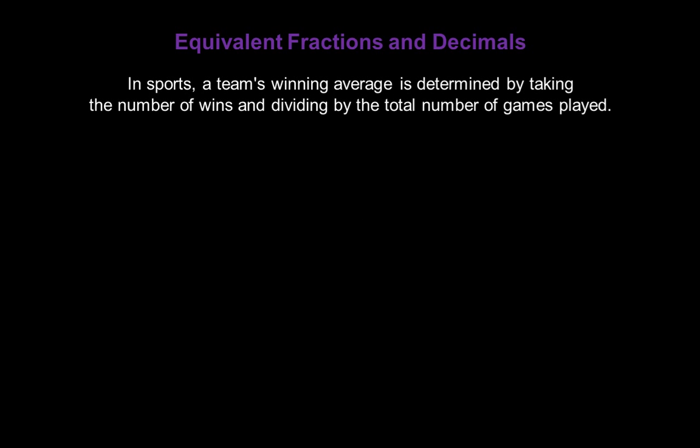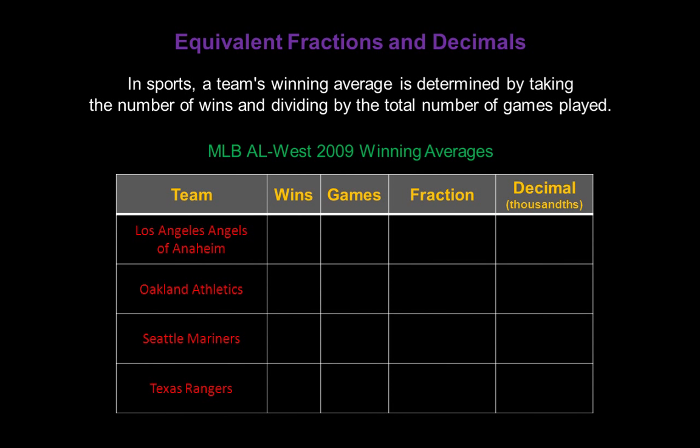In sports, a team's winning average is determined by taking the number of wins and dividing by the total number of games played — that's a fraction. Let's take a look at the winning averages in this table for Major League Baseball's American League West 2009 division. That division is comprised of the Los Angeles Angels of Anaheim, the Oakland Athletics, the Seattle Mariners, and the Texas Rangers.